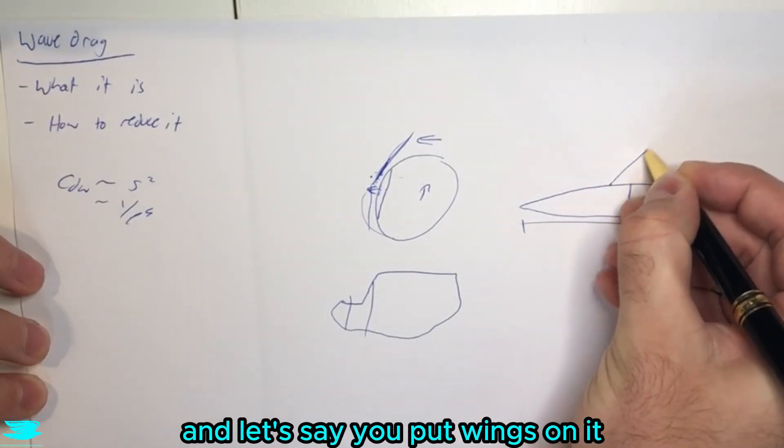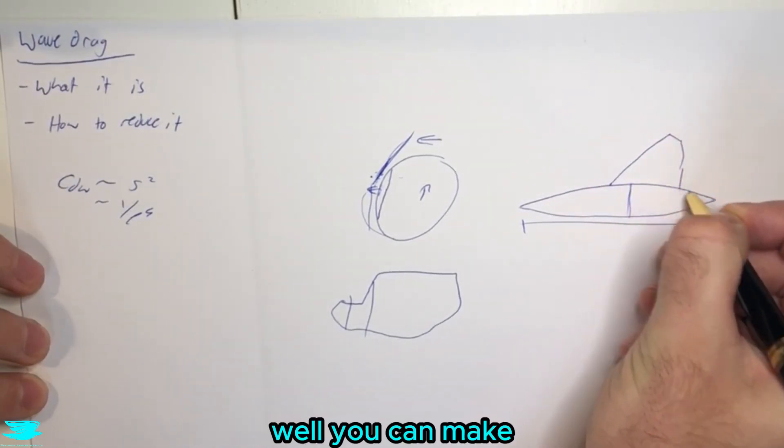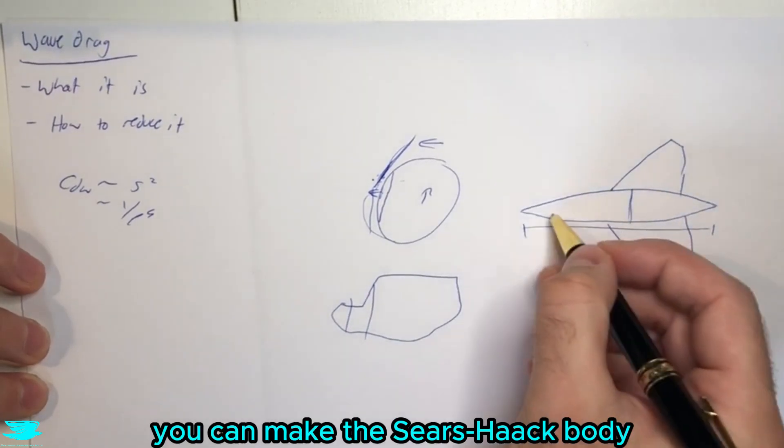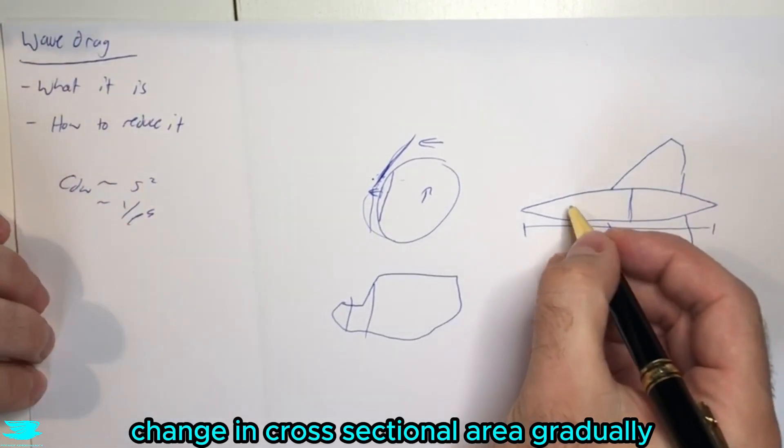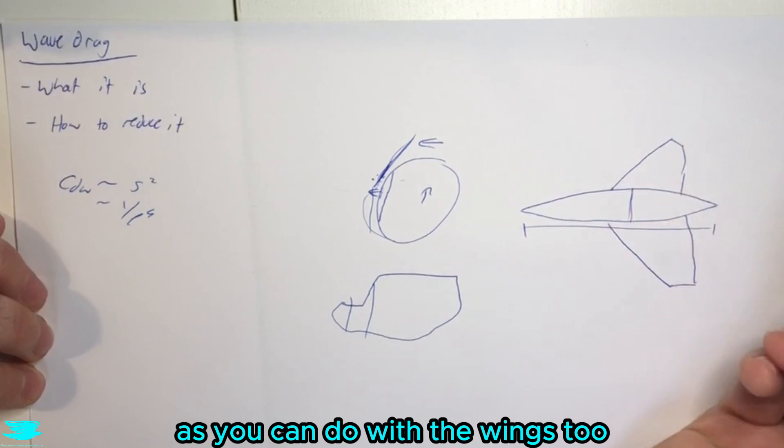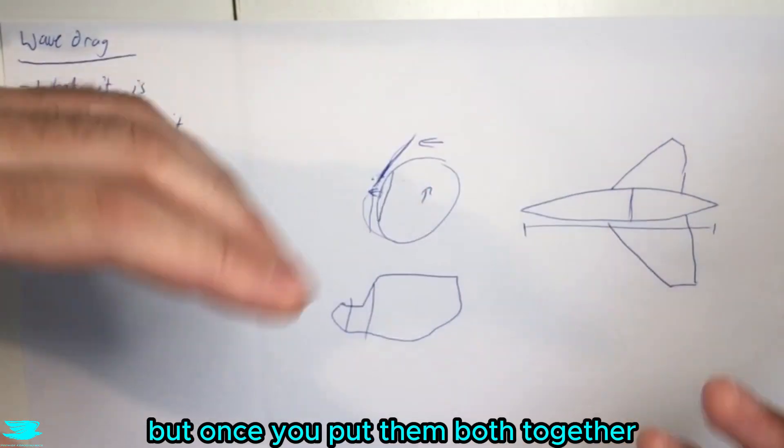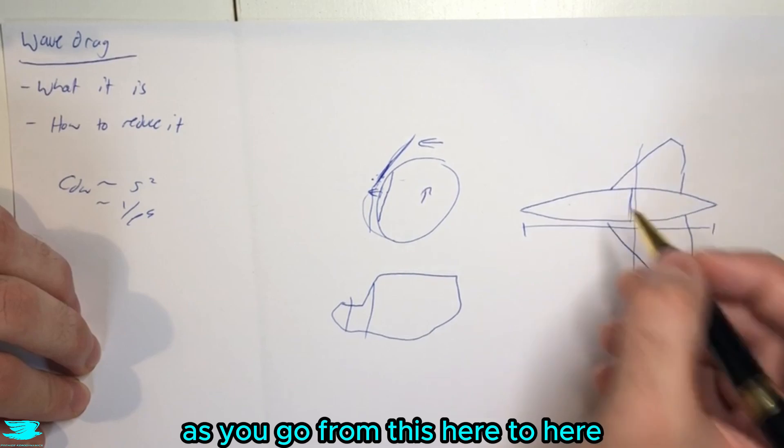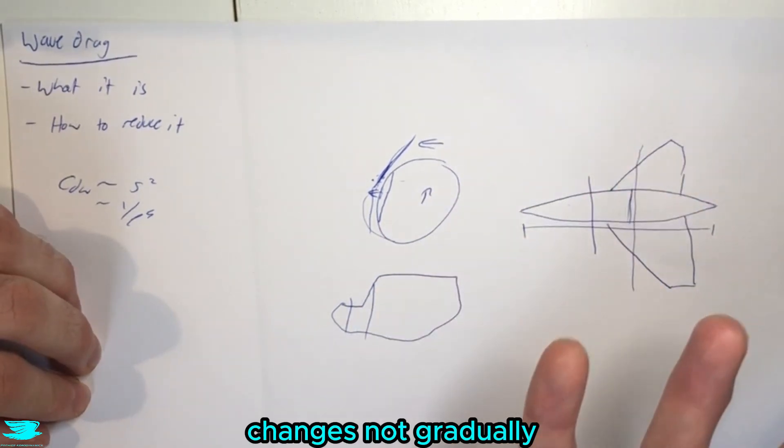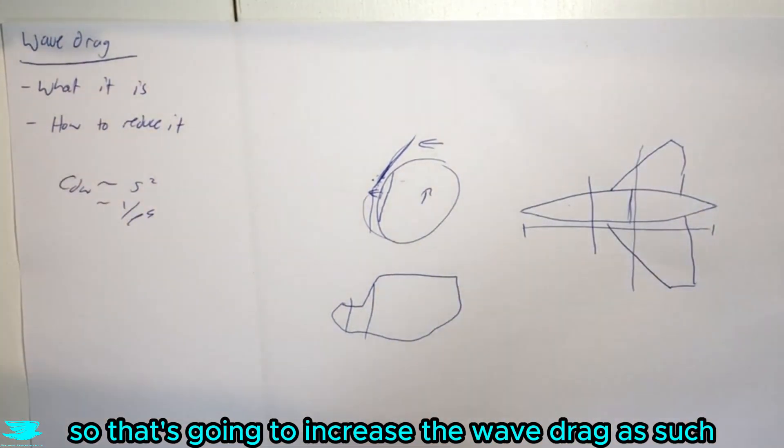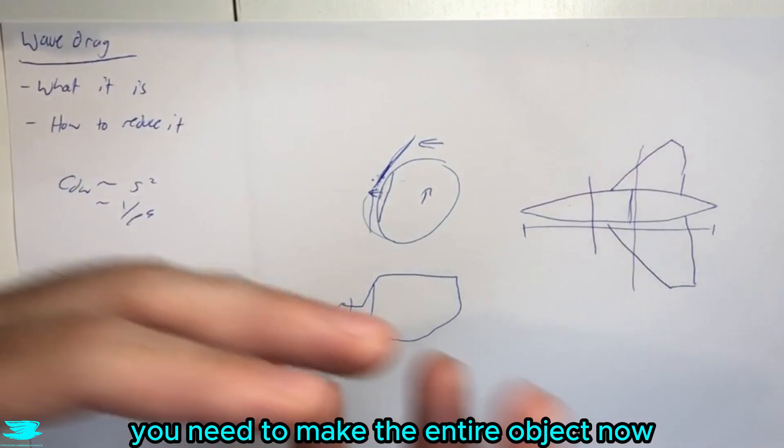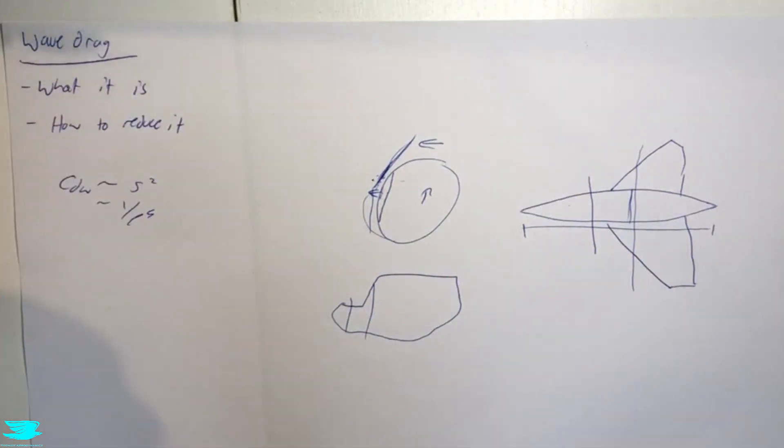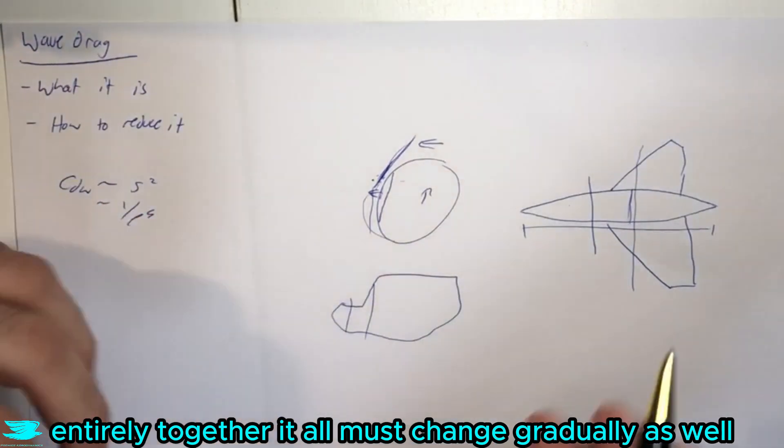So if you have a Sears-Haack body, and let's say you put wings on it, well, you can make the, this is like a top-down view, I guess, you can make the Sears-Haack body change in cross-sectional area gradually, as you can do with the wings too. But once you put them both together, now the cross-sectional area of this entire object, as you go from this here to here, changes not gradually. So that's going to increase the wave drag. As such, you need to make the entire object now gradually change as well. It's not enough just to make each component change gradually, entirely together, it all needs to change gradually as well.